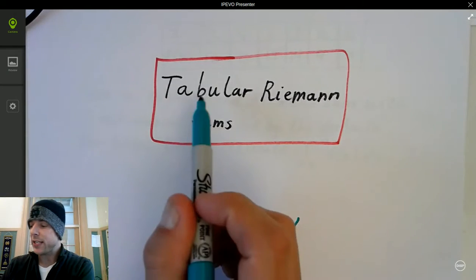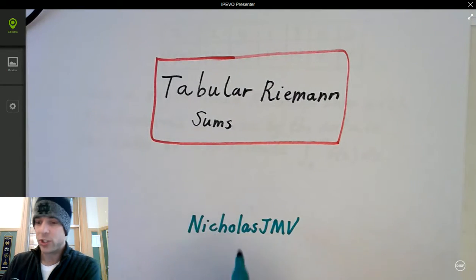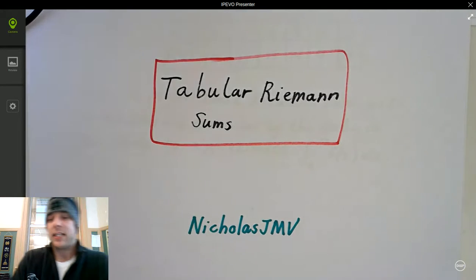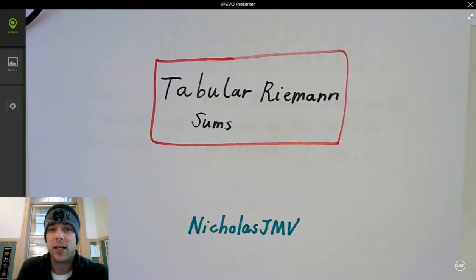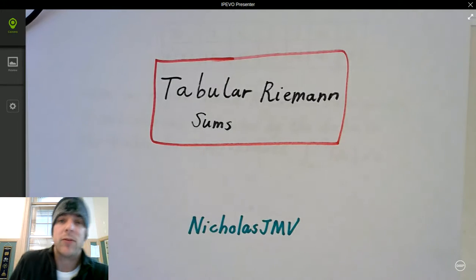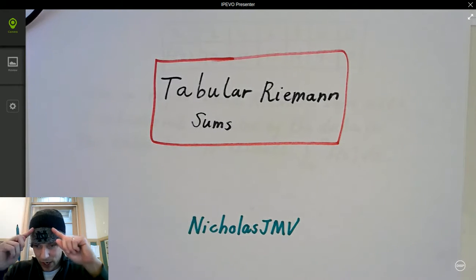Hey everybody, welcome to Tabular Riemann Sums. This is Nicholas JMV. Sorry I got my hat on. It's the coldest day in DC in a while. It's like 20 degrees in my room. I think the heat's finally turning on, but go Irish.